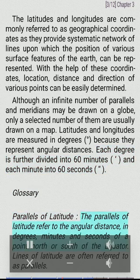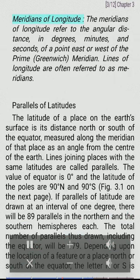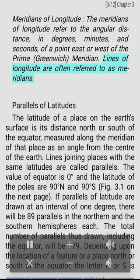Glossary. Parallels of latitude: The parallels of latitude refer to the angular distance in degrees, minutes and seconds of a point north or south of the equator. Lines of latitude are often referred to as parallels. Meridians of longitude: The meridians of longitude refer to the angular distance, in degrees, minutes and seconds, of a point east or west of the prime Greenwich meridian. Lines of longitude are often referred to as meridians.